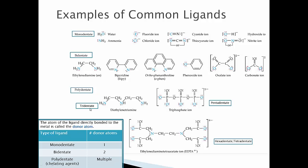For polydentate ligands: tridentate coordinates three times, pentadentate five, tetradentate four, and hexadentate six. EDTA for example can bind either six times or four times depending on the mode — either via the oxygens only, or via both oxygens and nitrogens.